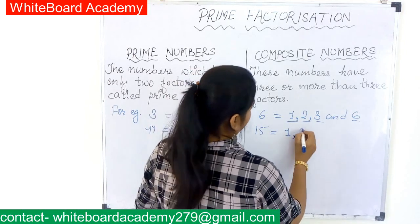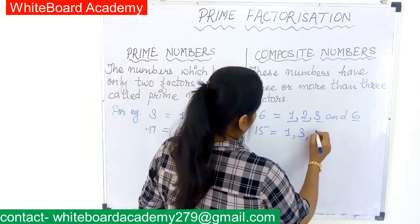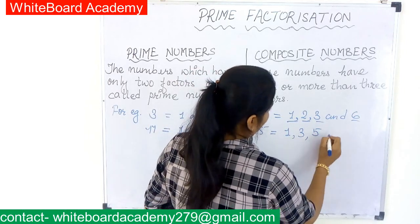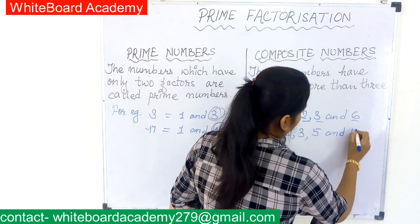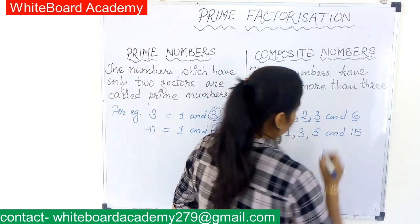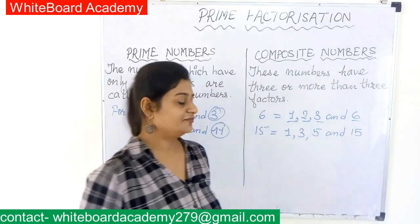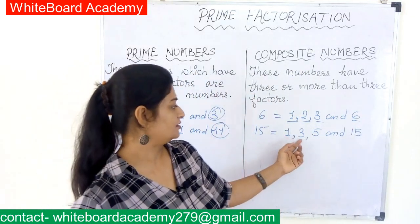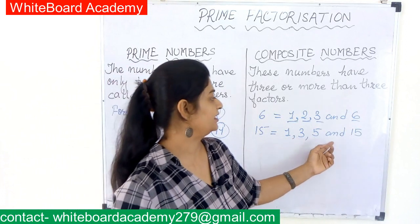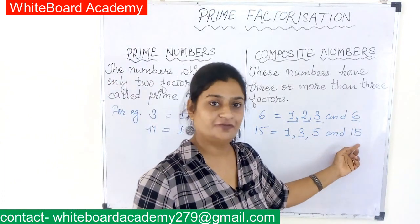Let's move to another number: 15. The factors of 15 are 1, 3, 5, and 15. So 15 also has 4 factors: 1, 3, 5, and 15, making it a composite number.